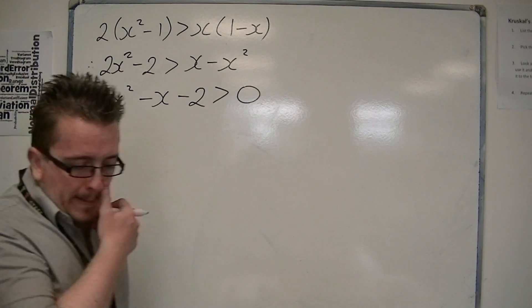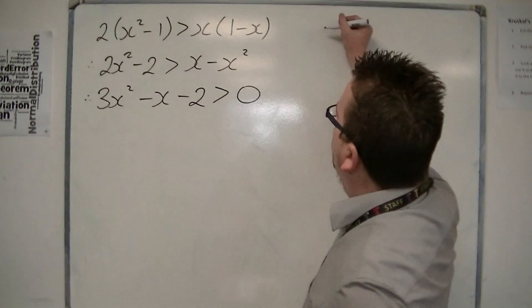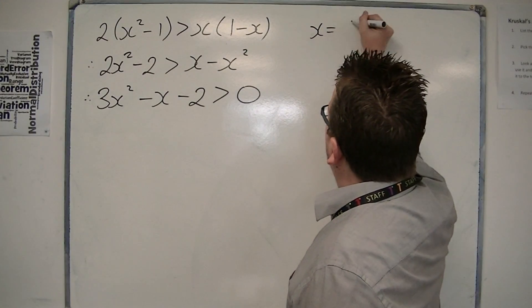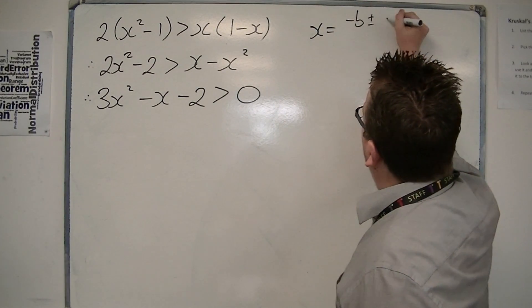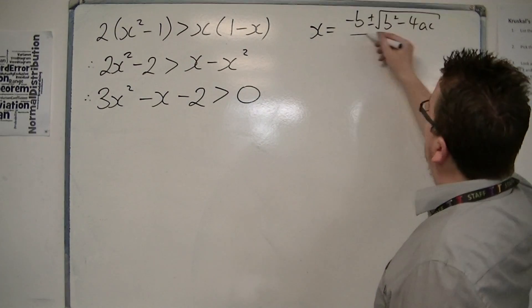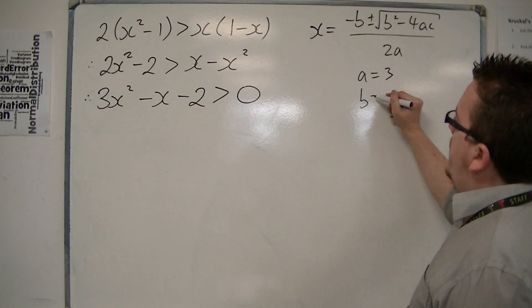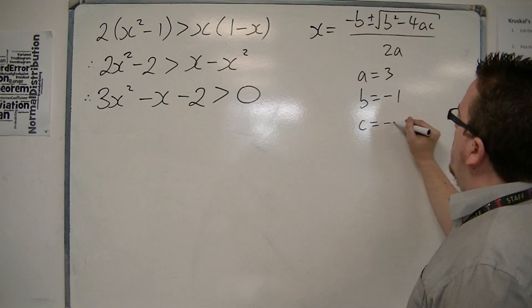Now, in dealing with that, I'm just going to use the quadratic formula. Always good to practice it. So, the quadratic formula: -b ± √(b² - 4ac) all over 2a, where a = 3, b = -1, and c = -2.